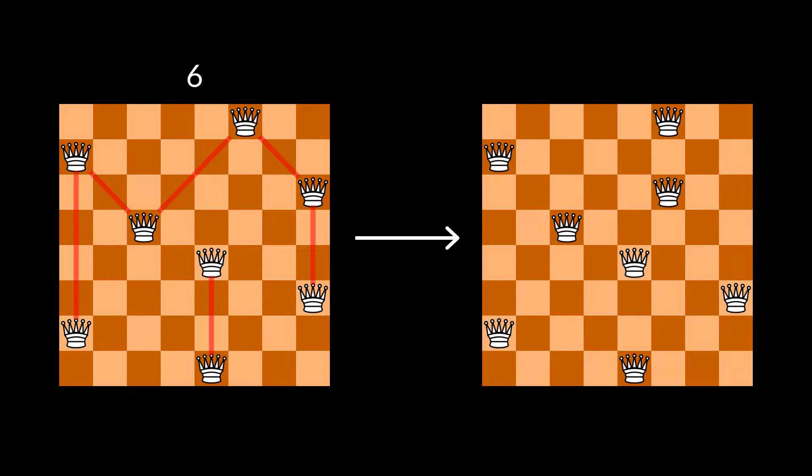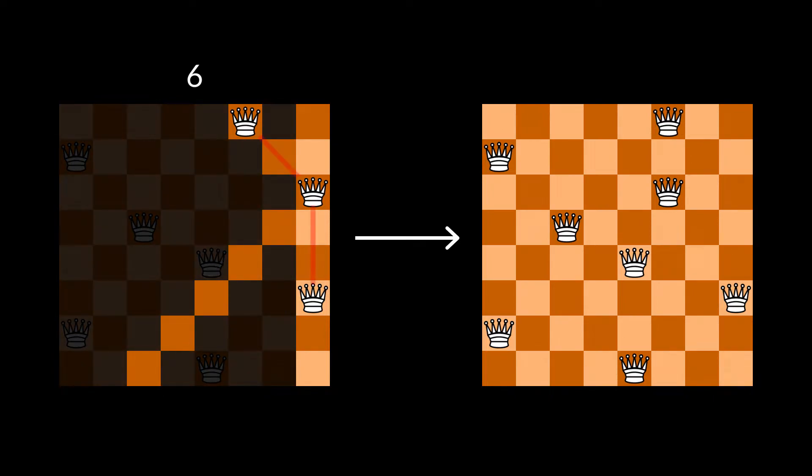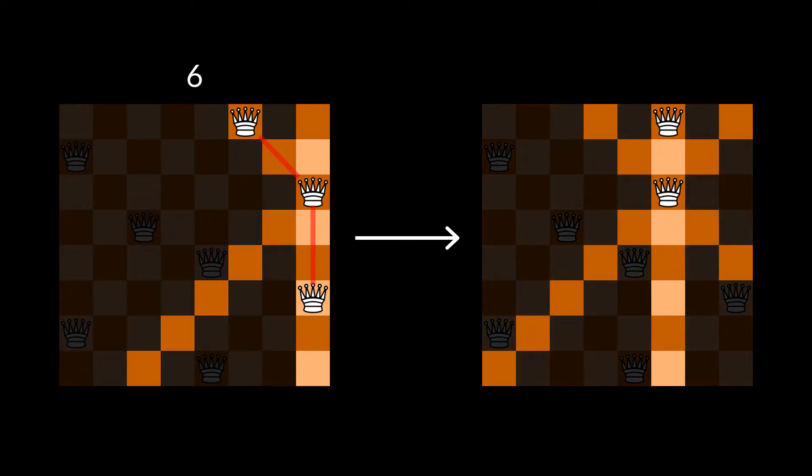The number of conflicts will be the same, except that we have to subtract some conflicts that disappear and add some new conflicts that arise. Before moving the queen, it was involved in two conflicts, which will now disappear. In the new position, the queen is involved in one conflict, which is new. So, the conflicts in the new state is six, minus the two conflicts that disappear, plus the one new conflict, for a total of five conflicts.